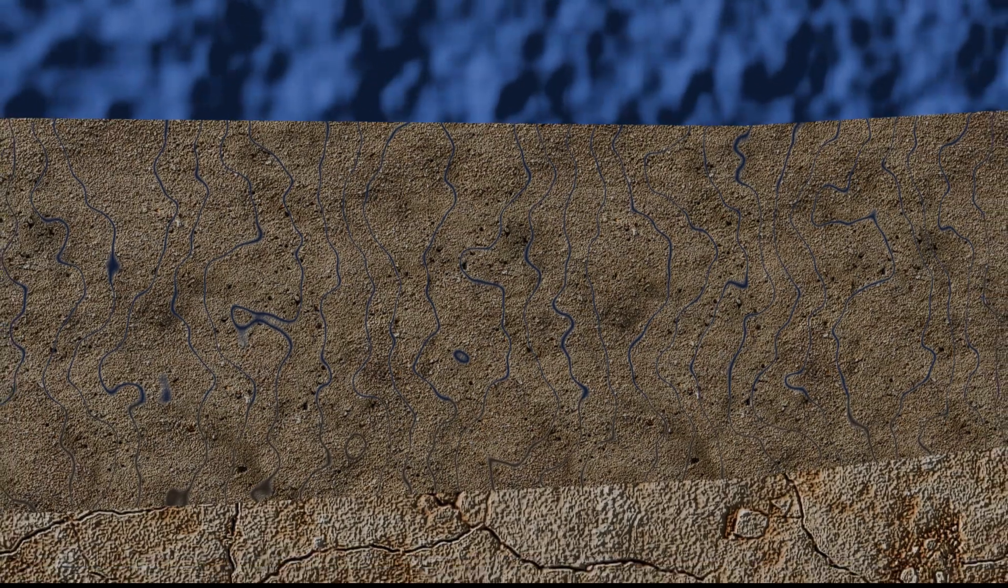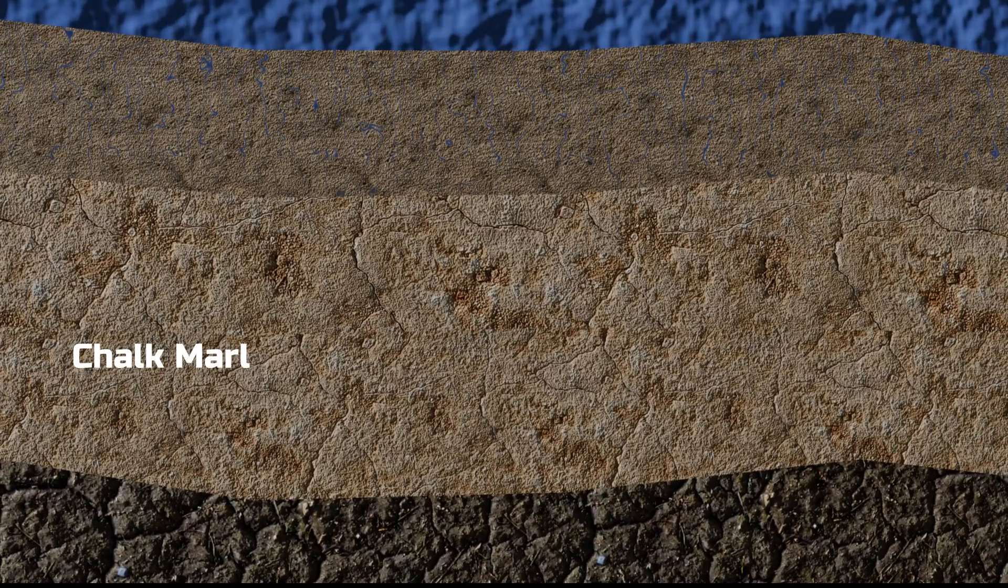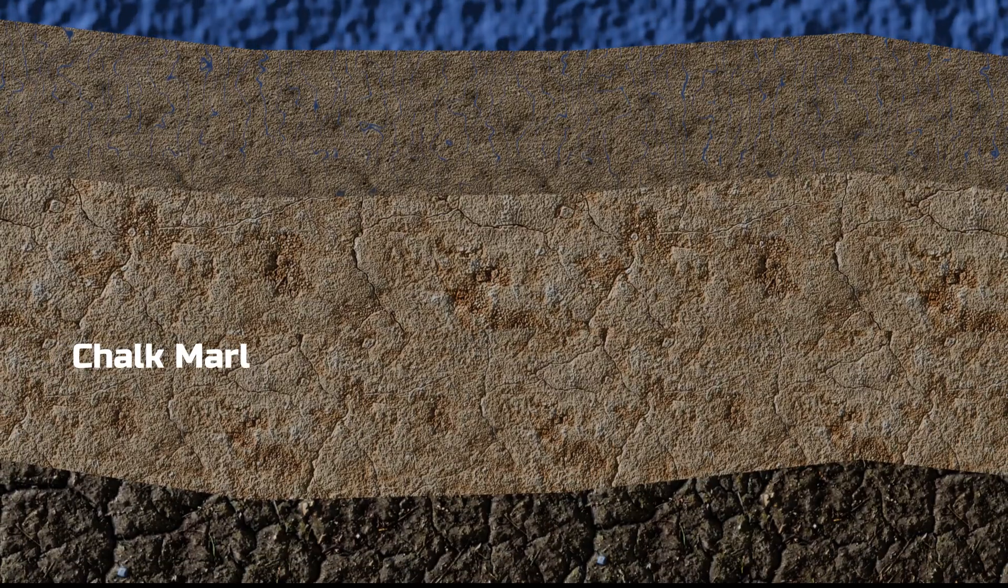Beneath this layer was another more stable layer called chalk marl. This layer was less permeable, with almost negligible cracks, making it a better option for tunneling.